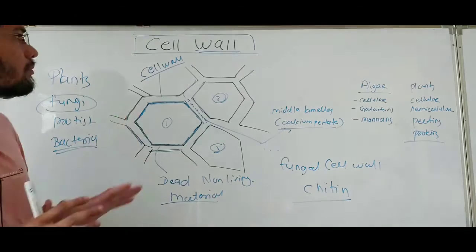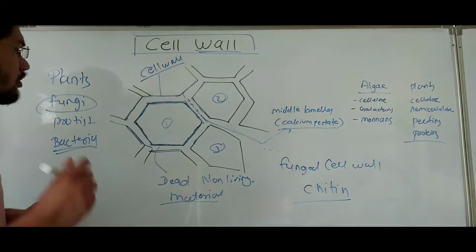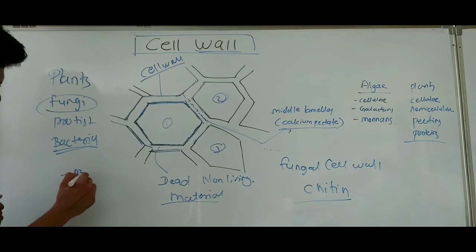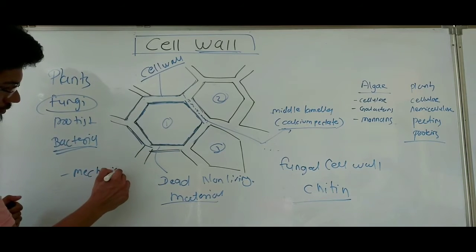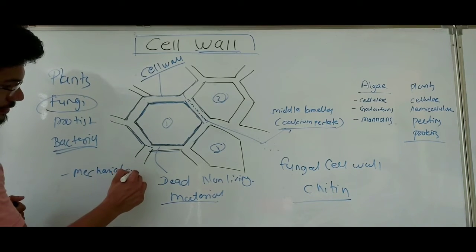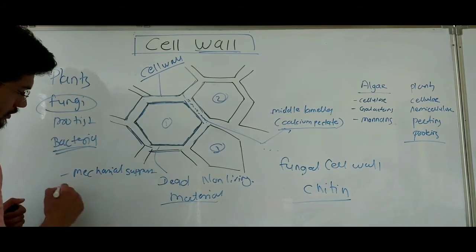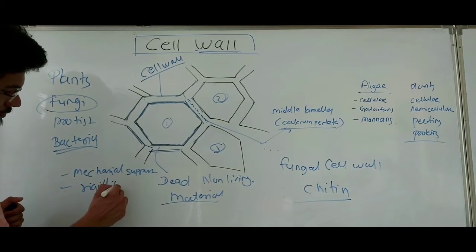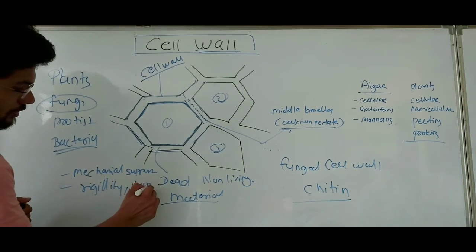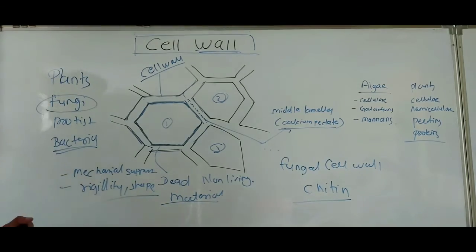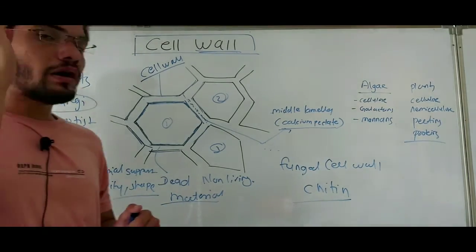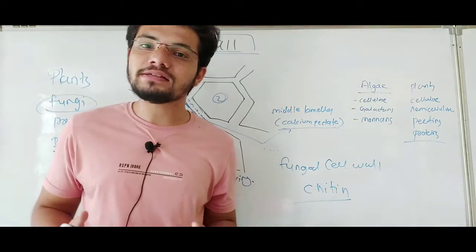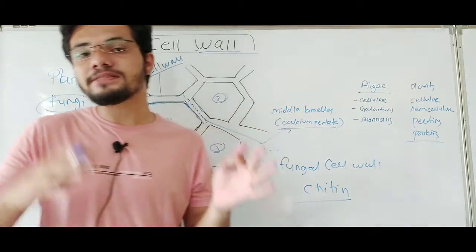The functions of the cell wall include providing mechanical support, rigidity, and shape to the cell. Cell wall is mainly present in plant cells and absent in animal cells.